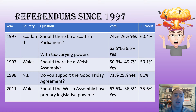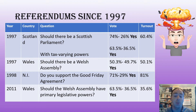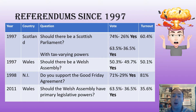Referendums since 1997: we had the 1997 referendum in Scotland, which interestingly asked two questions — should there be a Scottish Parliament, and should it have tax-varying powers? The Scottish people said yes to both. Turnout was just over 60%; support for a Scottish Parliament was overwhelming at 74%, and the tax-varying powers were also strongly positive at 63.5%.